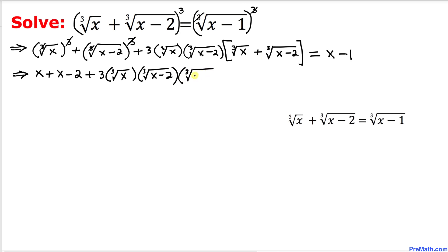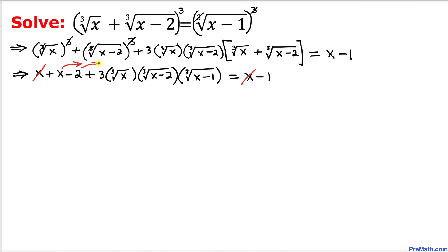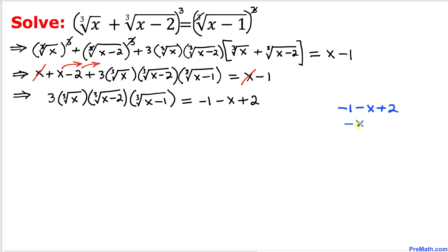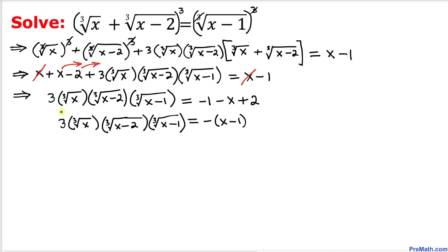So we can write: 3 times (cube root of x) times (cube root of x minus 2) times (cube root of x minus 1) equals x minus 1. The x terms on both sides cancel. Moving x and negative 2 to the right hand side, the right hand side simplifies to negative x plus 1, which factors as negative (x minus 1).